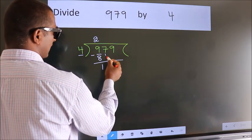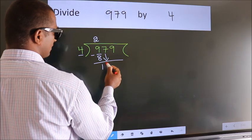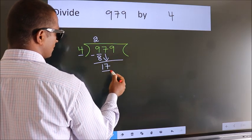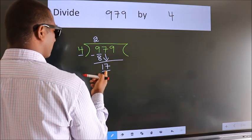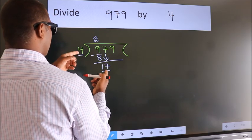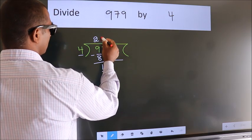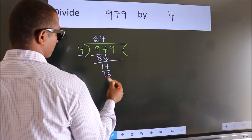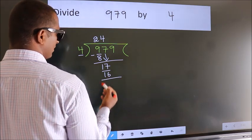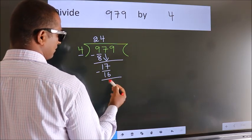After this, bring down the beside number. So, 7 down. So, 17. A number close to 17 in the 4 table is 4 fours, 16. Now we subtract. We get 1.